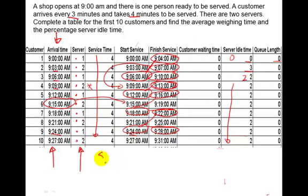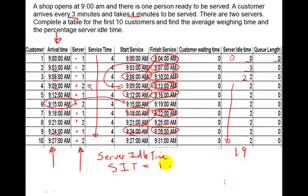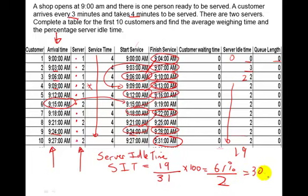Now let's look at server idle time, or SIT. That is the idle time divided by the total time the system has been running. Adding up all the idle time gives 19 minutes, over a 31-minute period (9:00 to 9:31). As a percentage that's about 61%. Since there are two servers, we divide by 2 — giving around 30.6%. So 30.6% of the time the servers are idle, which is very high — that means a third of their time they're doing nothing.